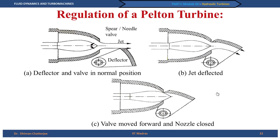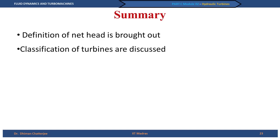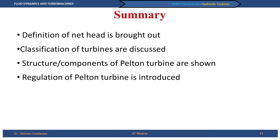This brings us to the end of the discussion on Pelton turbine. We will take up some problems in tutorials to get the mathematics correct. In summary, we have talked about the definition of net head, the classification of turbines based on direction of flow, impulse versus reaction, and most importantly specific speed. We have discussed the structure and components of the Pelton turbine, and the flow regulation required. In the next lecture, we will continue with reaction turbines — Francis and Kaplan turbines — and introduce the concept of the draft tube.